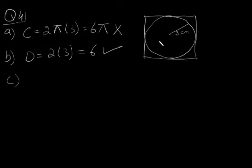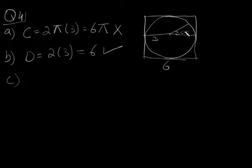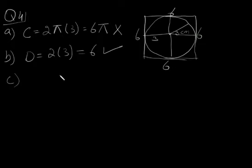In part C, it asks for the area of the square. Since the radius is 3, the diameter is 6, which is the side of the square. So all sides are 6. The area of the square is 6 times 6, which equals 36.